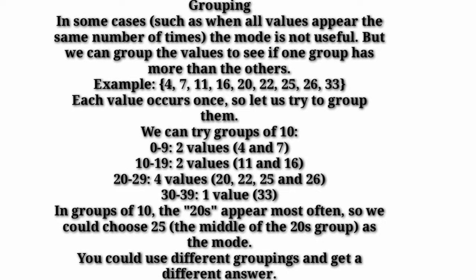But we can group the values to see if one group has more than the other. For example: 4, 7, 11, 16, 20, 22, 25, 26, 33 — each value occurs once. Let us try grouping them in groups of 10. From 0 to 9: 2 values (4 and 7). From 10 to 19: 2 values (11 and 16). From 20 to 29: 4 values (20, 22, 25, 26). From 30 to 39: 1 value (33). The 20s appear most often, so we could choose 25, the middle of the 20s group, as the mode. Note that different groupings can give different answers.